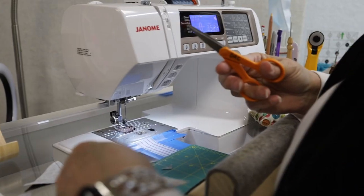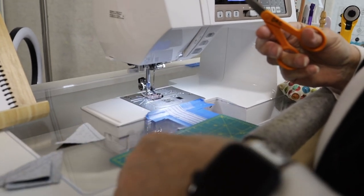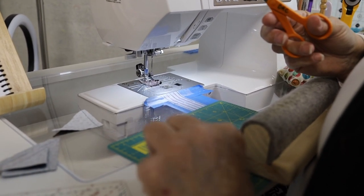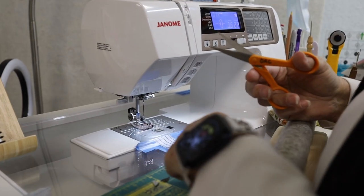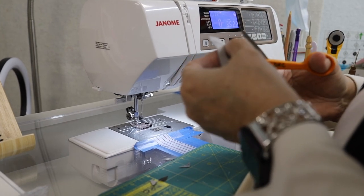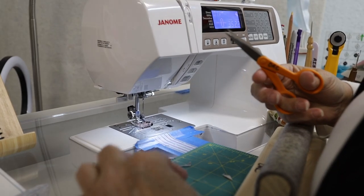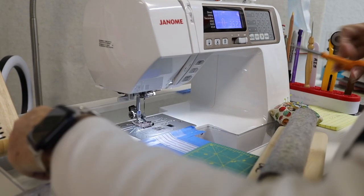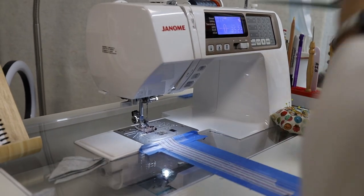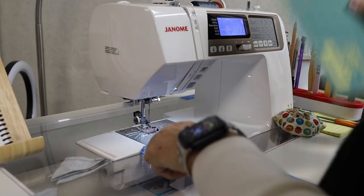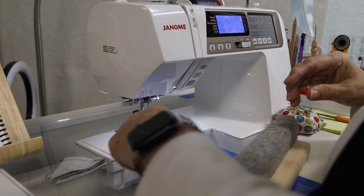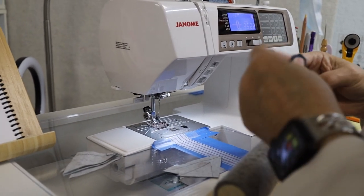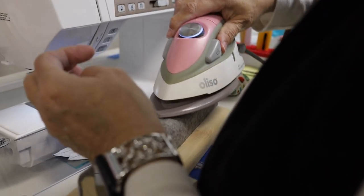You want to cut your little kernel off, reducing some of that bulk. There you go. Now we're ready to press open. Didn't forget my clapper this time. Got it right here. I'm going to press open my half square triangles that I made earlier. But I just now squared up.